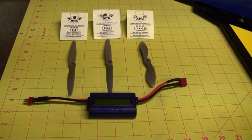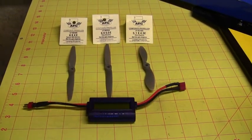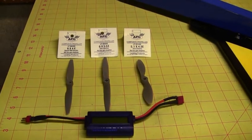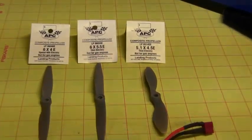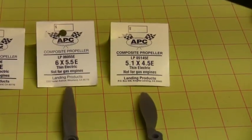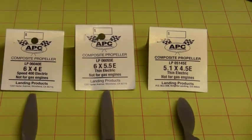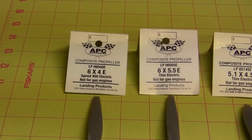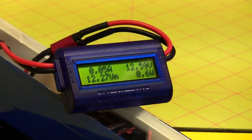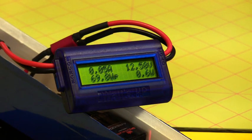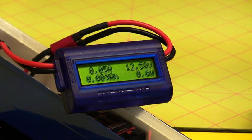Okay, let's do some static testing. I've got three props that I'm going to try to use here and see what kind of power we're getting out of them. There's a 5.1 by 4.5, 6 by 5.5, and a 6 by 4 prop. We're going to go ahead and test the first one, the 6 by 4 prop.